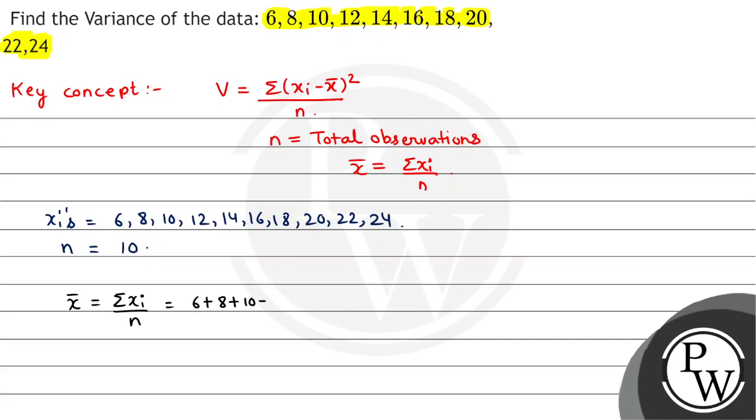First we have to find x bar. That is summation xi divided by n: 6 plus 8 plus 10 plus 12 plus 14 plus 16 plus 18 plus 20 plus 22 plus 24, addition of all the numbers divided by total number of observations, that is 10. So I got 150 divided by 10, so x bar mean is 15.